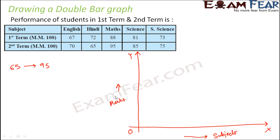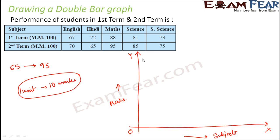Let us choose a scale where one unit represents 10 marks. This is convenient because we need to mark up to 100, since 95 is the maximum marks. So on the y-axis we mark 10, 20, 30, 40, 50, 60, 70, 80, 90, and 100. This is how we have chosen the scale on the y-axis.